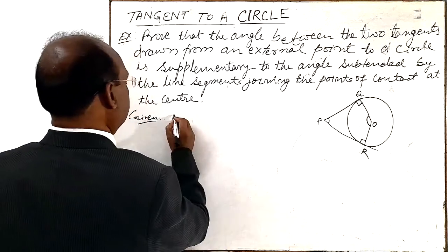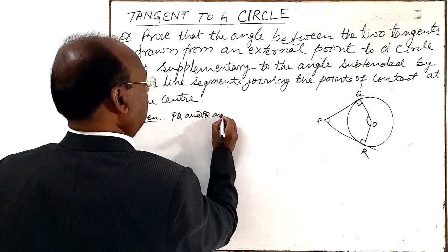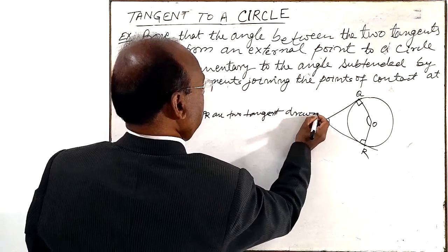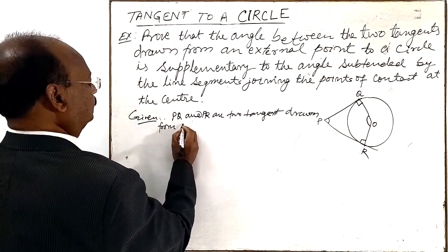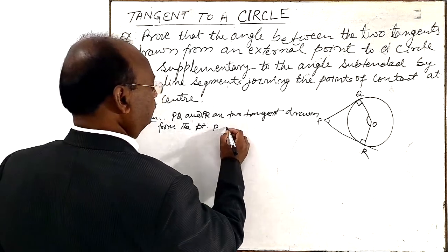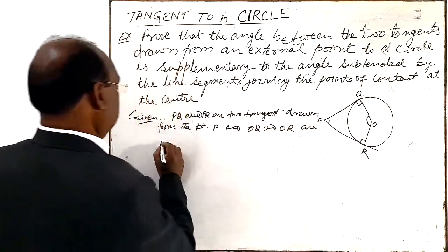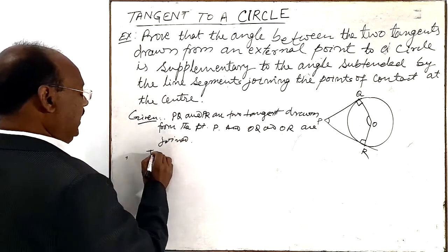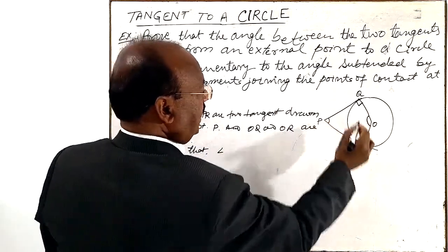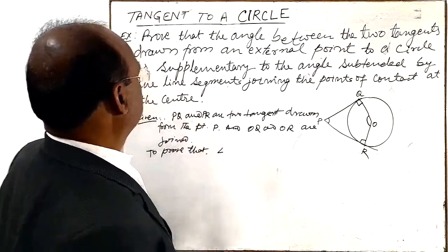We are given that PQ and PR are two tangents drawn from the external point P. OQ and OR are joined. Then we have to prove the required result.